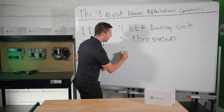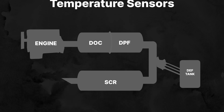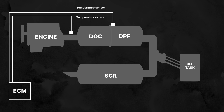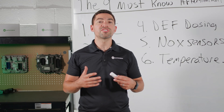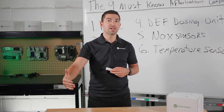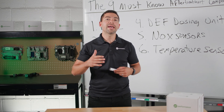The sixth after-treatment component is temperature sensors. There are multiple sensors: one before the DOC, one between the DOC and the DPF filter, and one after the SCR system. These sensors provide critical information back to the engine control module to regulate your regeneration system, informing the regeneration process of how hot it's getting at different points.